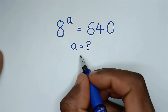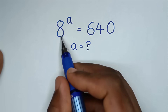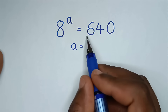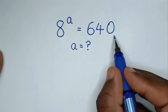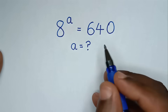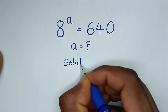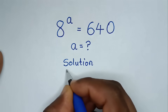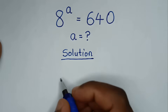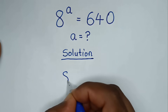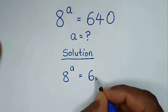Hello. You are welcome to solve this math problem which is 8 power of A is equal to 640. To find the value of A from this equation. Our problem here is 8 power of A is equal to 640.